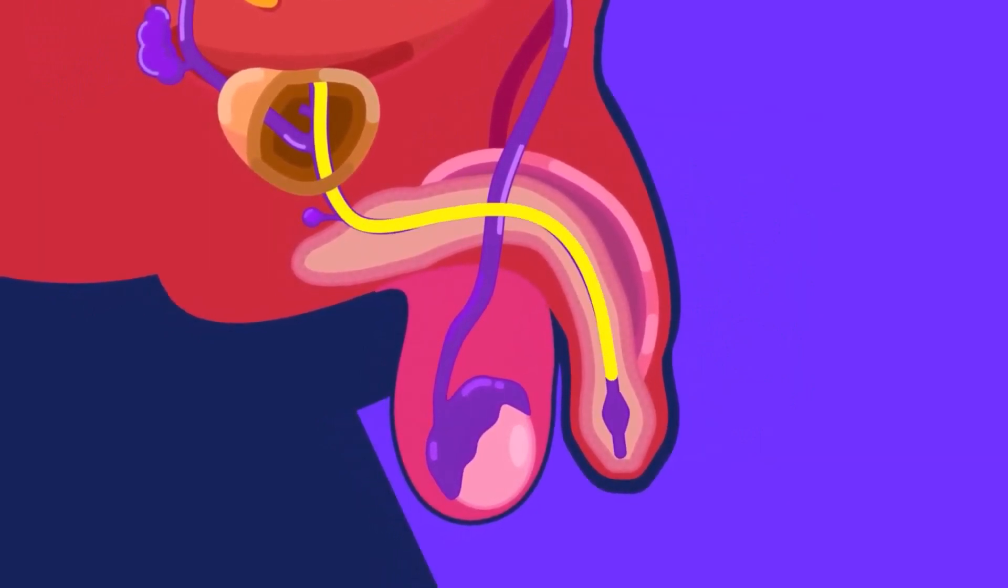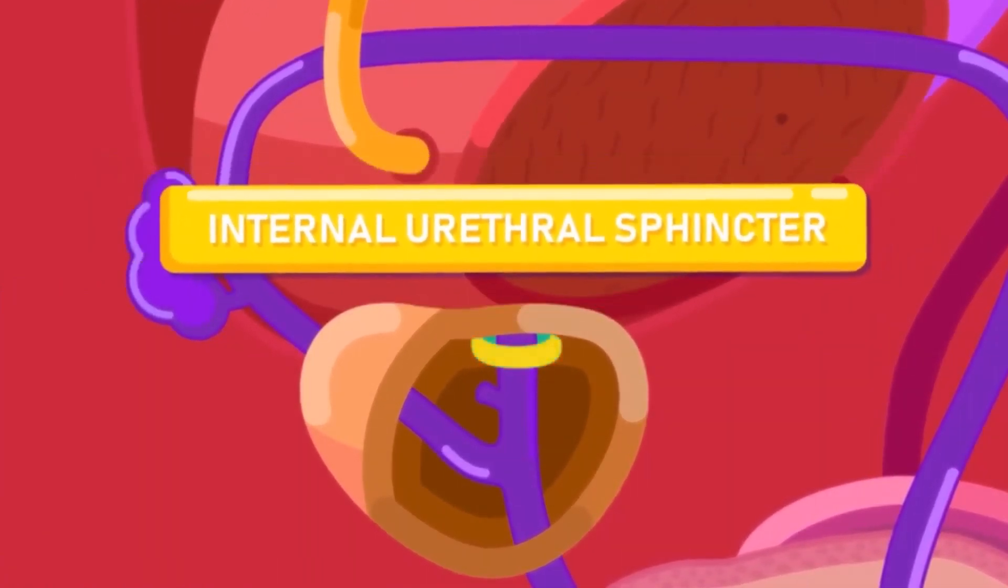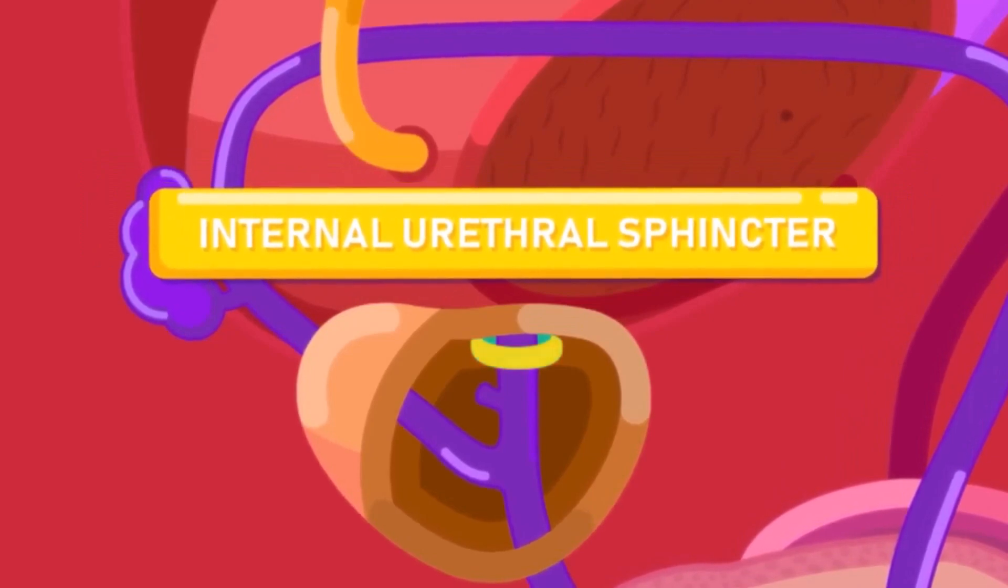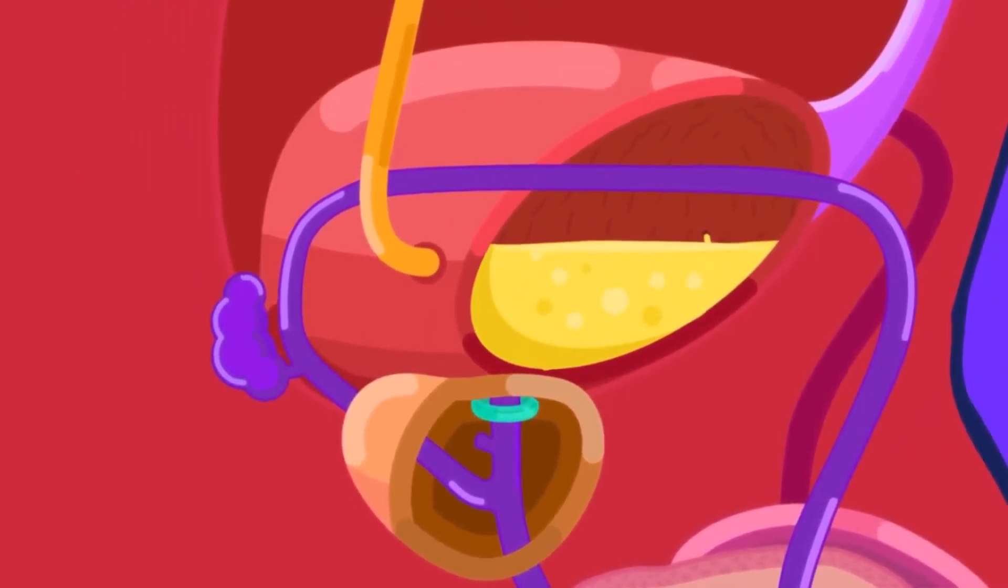Urine and semen will not pass through the urethra at the same time. This is due to a circular band of involuntary muscle called the internal urethra sphincter at the base of the urinary bladder that blocks urine from coming out or flux of semen from coming in during ejaculation.